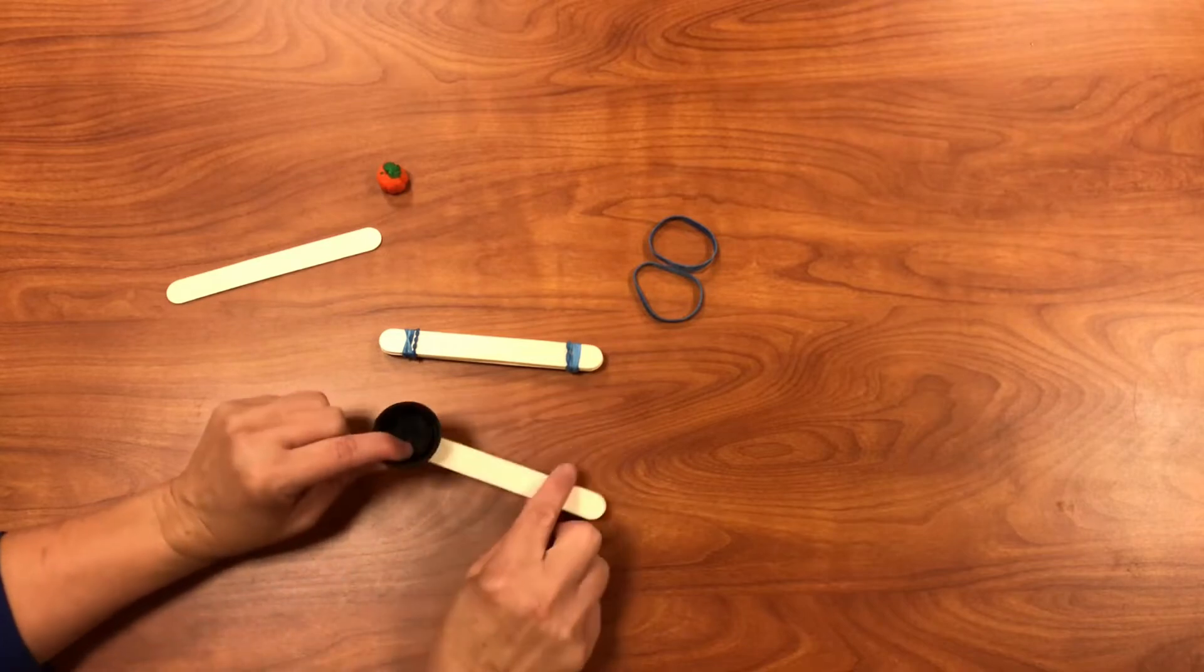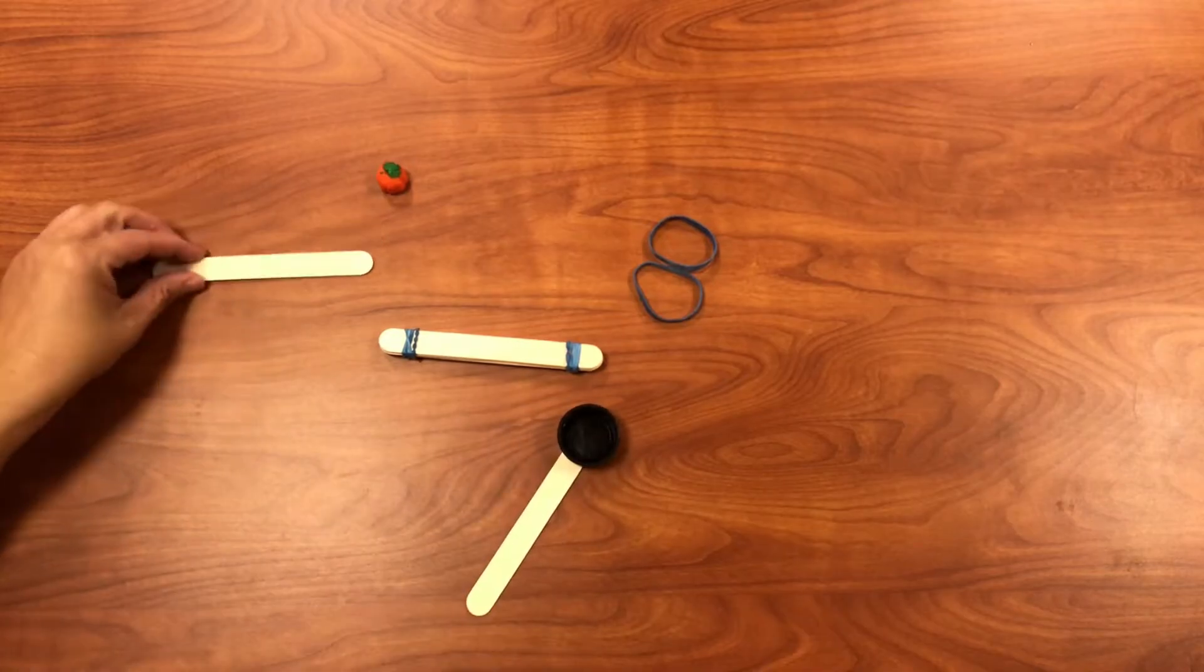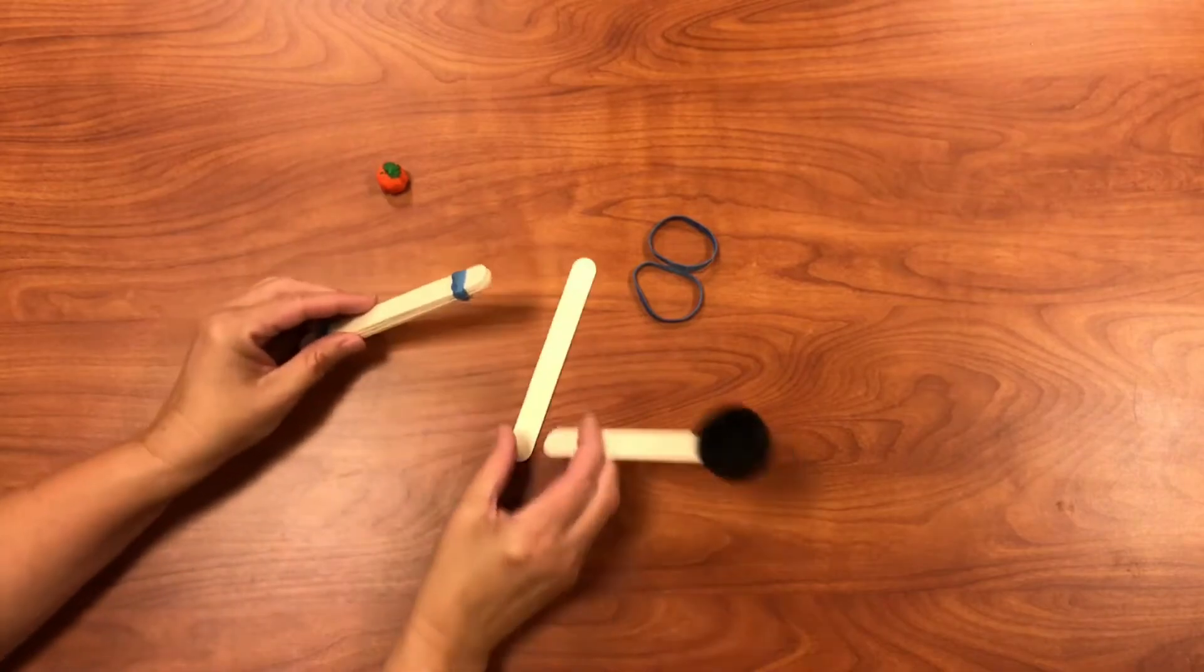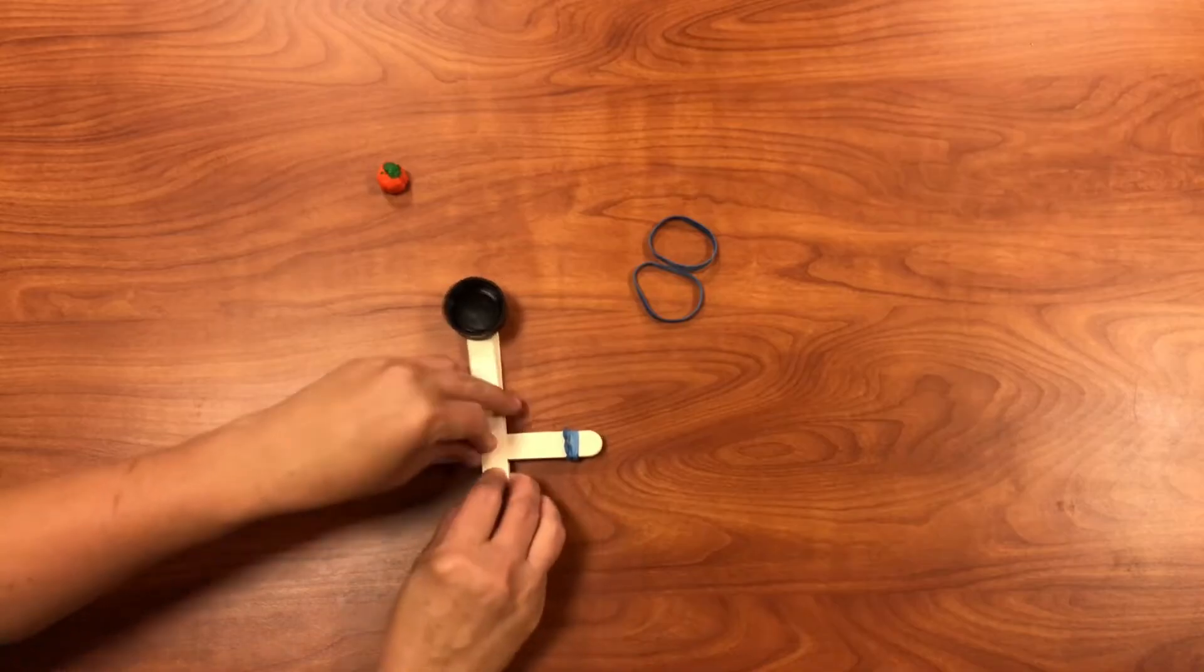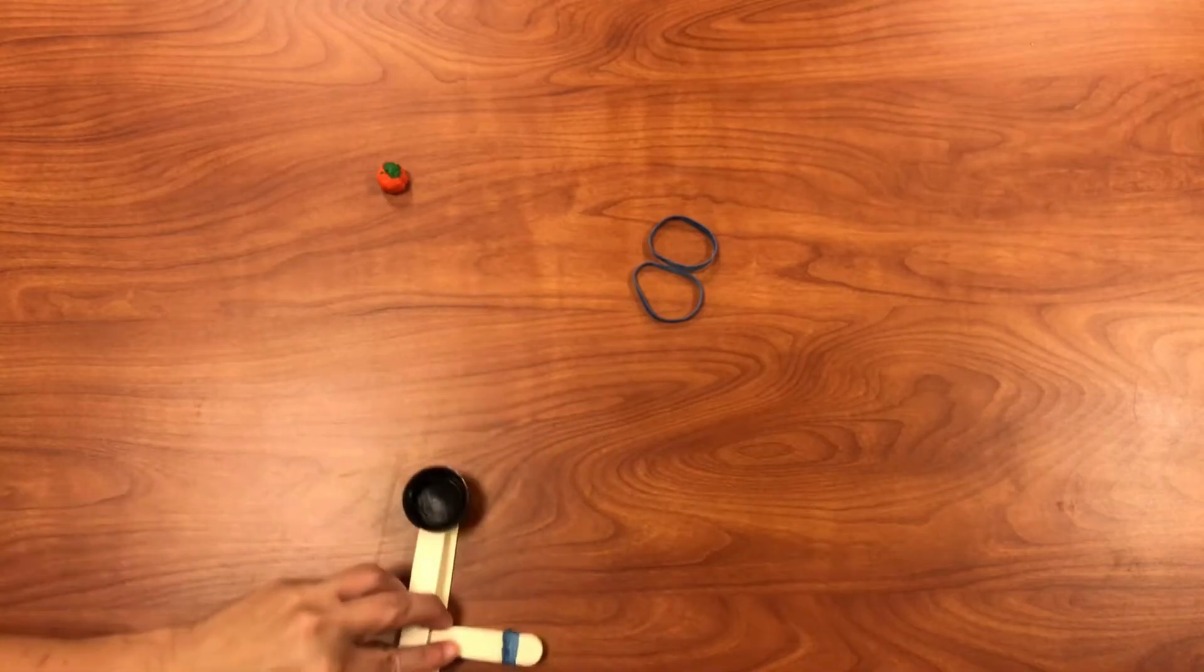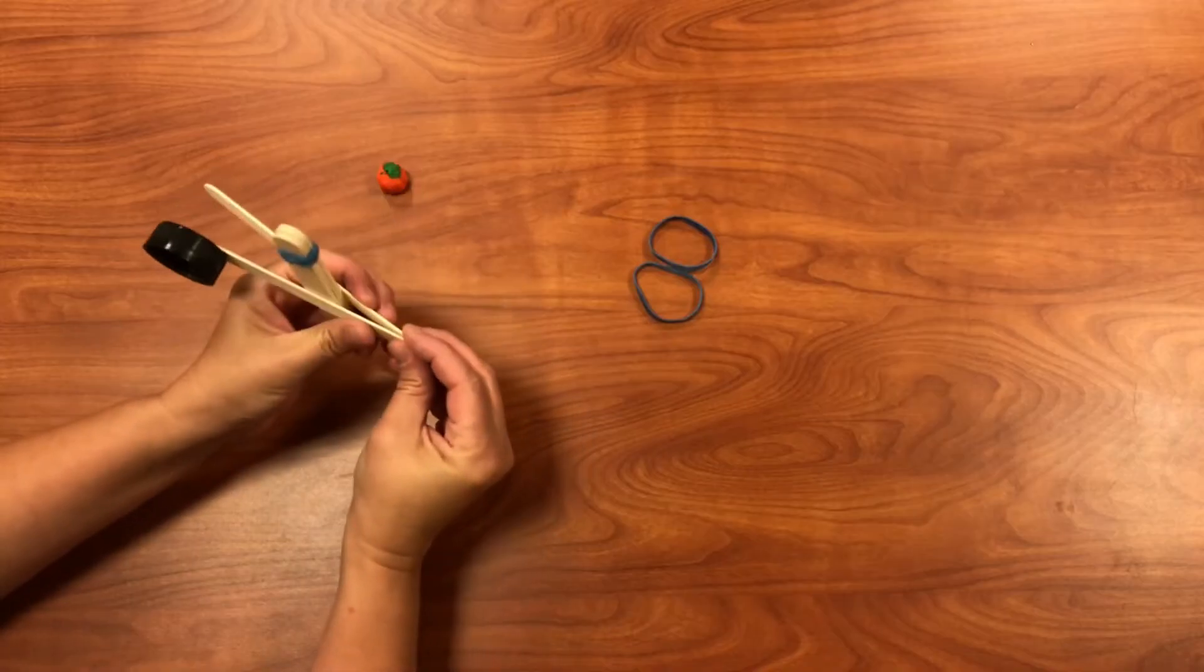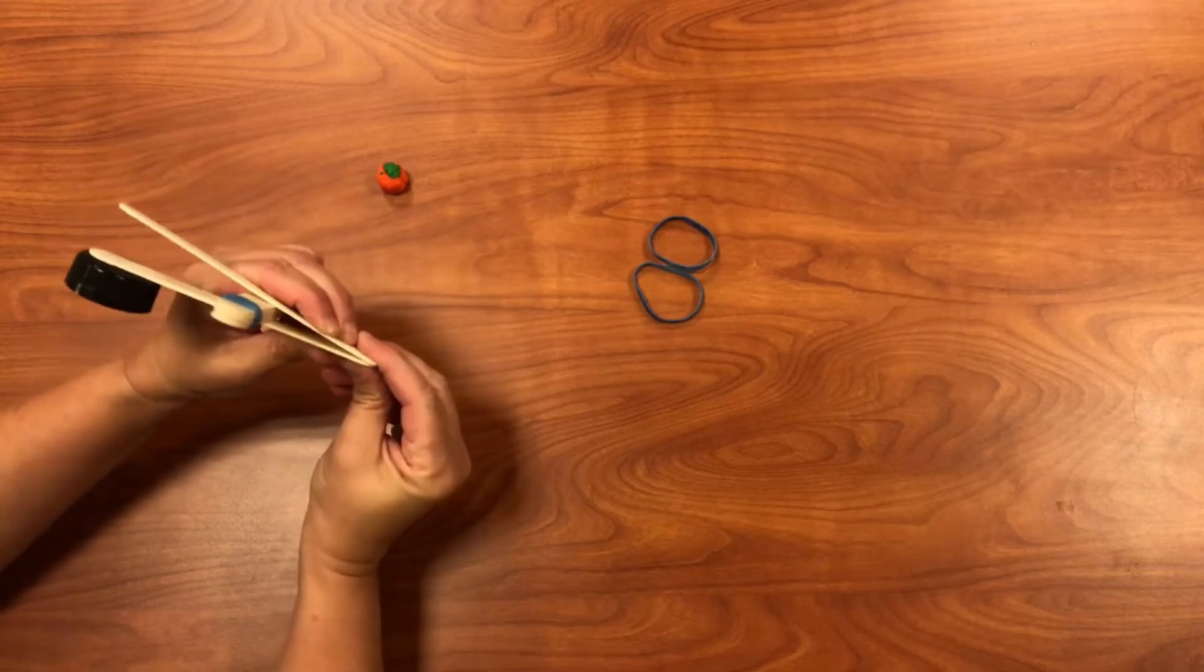Okay, so now we are going to take our remaining stick, put one underneath the one with your cap on top. Then we are going to hold this together and do the same thing that we did over here, but down at the bottom where these two sticks are together.